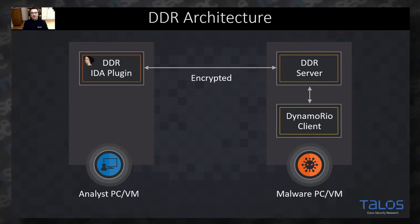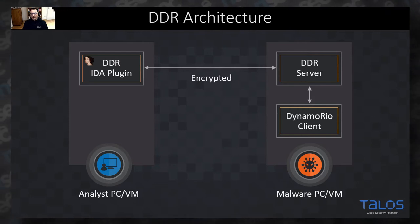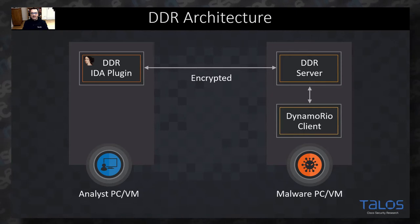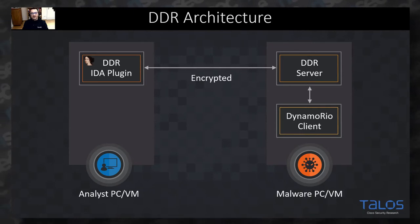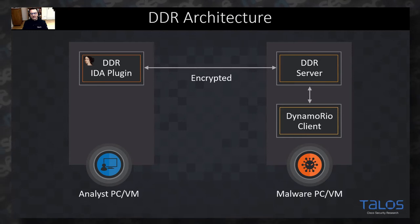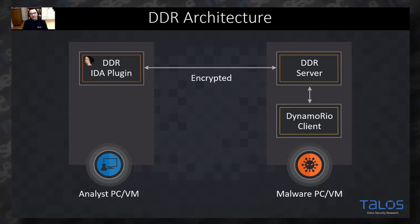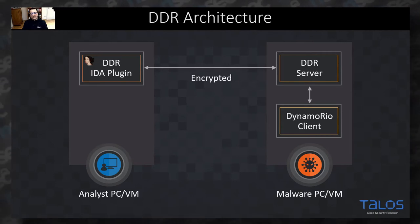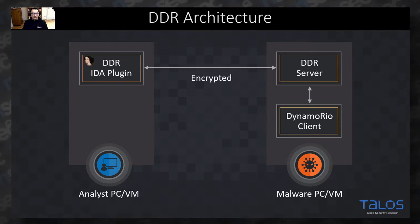You can run it on the same box, but it's not recommended. The IDA plugin sends commands to the DDR API server, which controls a command-line tool — the DynamoRIO client. You can also run the DynamoRIO client standalone. For example, on a completely air-gapped system, install the DynamoRIO client with nothing else on the box. The malware sample gets instrumented, all interesting data is collected and written to a JSON file, and you can later copy that JSON file to the analyst machine and load it into IDA.